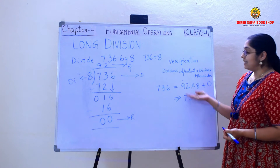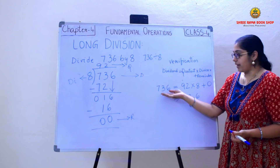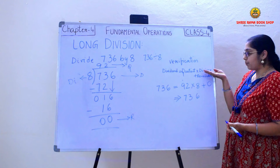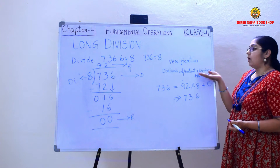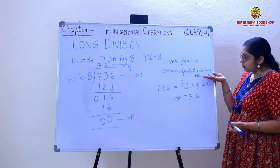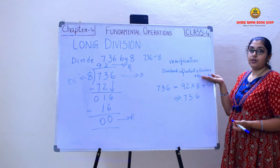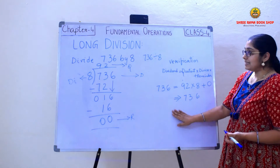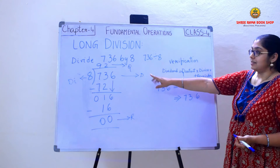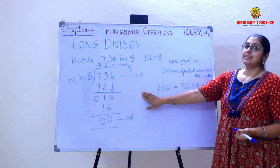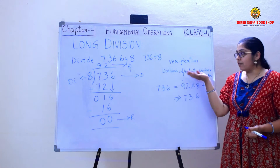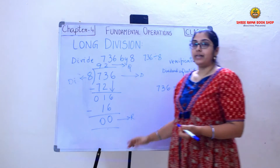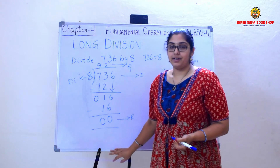So this is nothing but the dividend. I got both sides equal when I do the product of quotient and divisor and add the remainder, getting the same answer. Thus my division is correct. This is how we verify. Now I will take one more example for clear understanding.